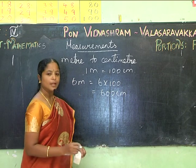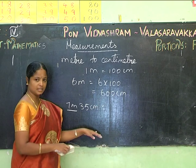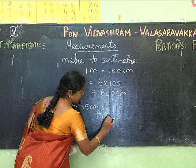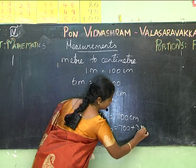If I have 7 meters 35 centimeters, how will I convert? I'll convert the 7 meters into centimeters and then add the 35 centimeters. That is: 7 meters equals 700 centimeters, so 7 meters 35 centimeters equals 700 + 35 = 735 centimeters.